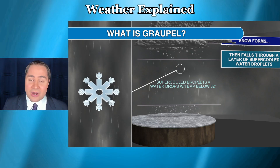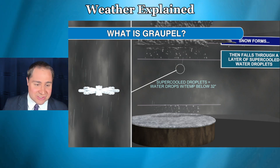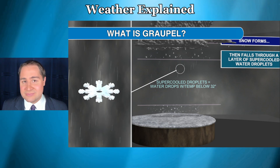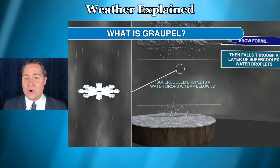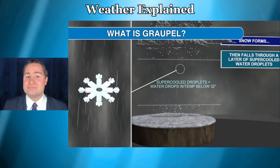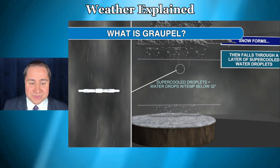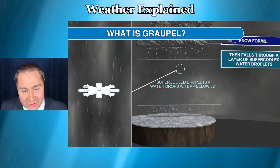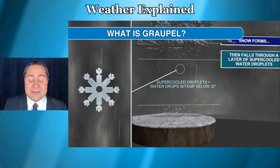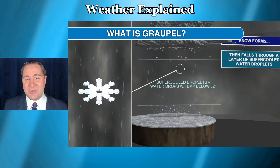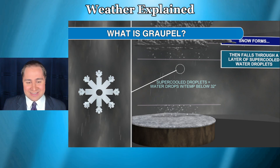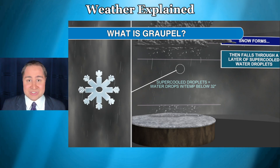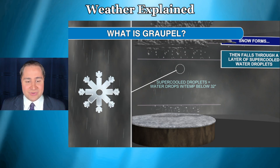If there are any particles of dust, of soot, of pollution in the atmosphere, these tiny little liquid water droplets are going to freeze to those particles. So if the atmosphere is clear enough and the droplets are small enough, you get this layer of super-cooled water droplets below 32 degrees just hanging out in the atmosphere.